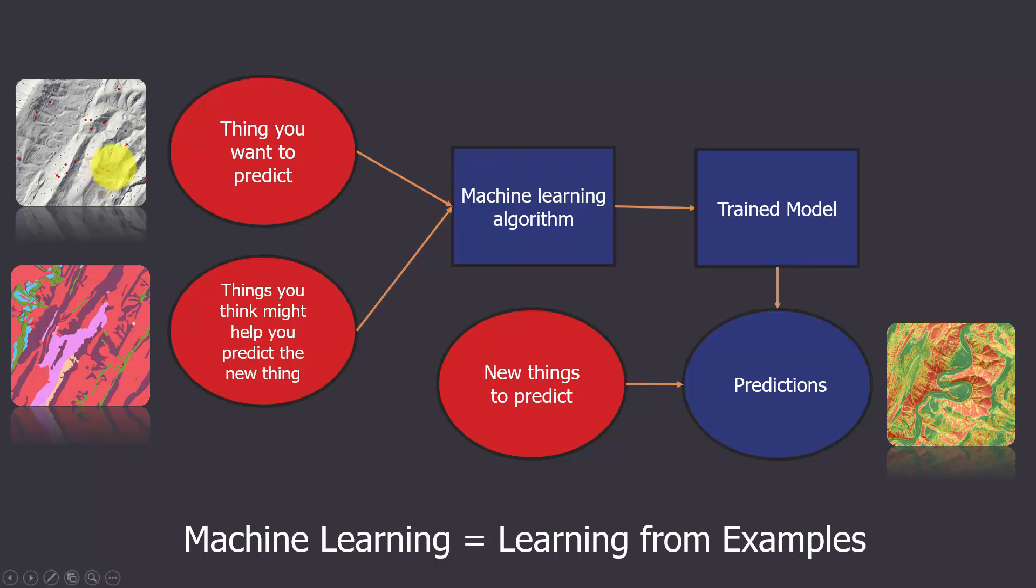So in this example, I'm trying to predict the likelihood that there will be a landslide at a location. So as input, I have points that represent where there are landslides and then other points where there aren't landslides. And then I also have some variables that I think could be helpful in making that prediction. So things like soil types, soil wetness conditions, topographic characteristics, geologic characteristics. So we basically have that information at each of these locations, and we can feed that into an algorithm.